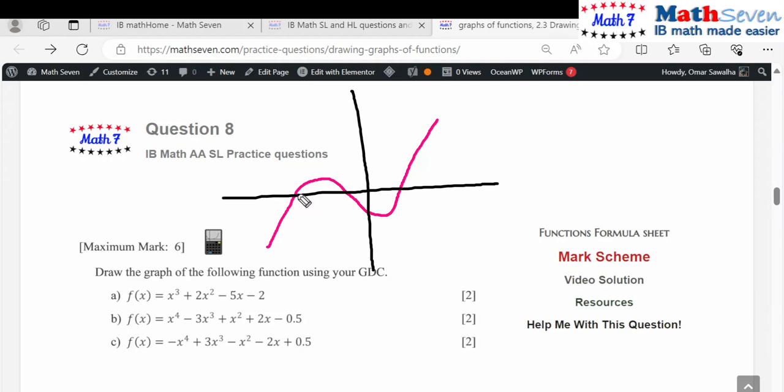So this graph intersects the x-axis in three different points. Why? Because it is x cubed. Is it always the case like this? No, because the graph of x cubed by itself looks like this. It goes like this and goes like this.